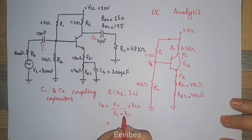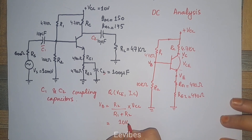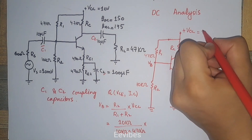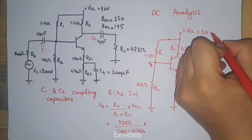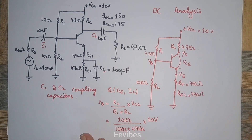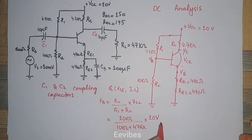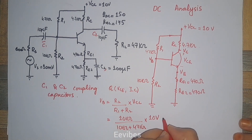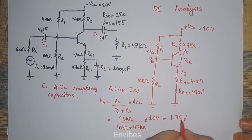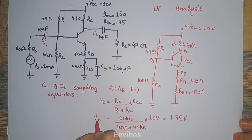VB is equal to R2 over (R1 plus R2) multiplied by VCC. Substituting the values: 10 kilo-ohms divided by (10 kilo-ohms plus 47 kilo-ohms), multiplied by VCC which is equal to 10 volts.